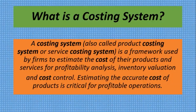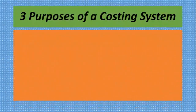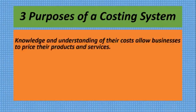So there you have a definition of what a costing system is, including a bit of what it does. There are actually more than three purposes of a costing system — I will just give three here; when you read your textbook you will see more. The first purpose is that knowledge and understanding of costs allows businesses to price their products and services.